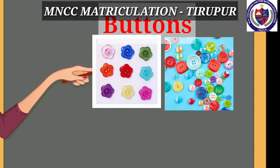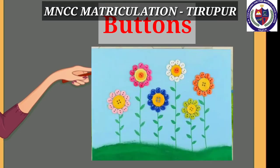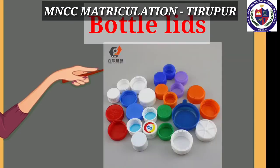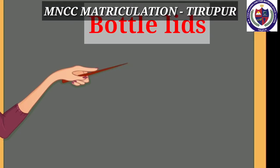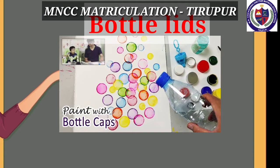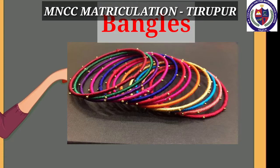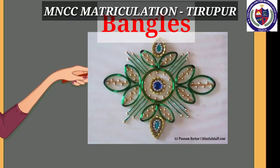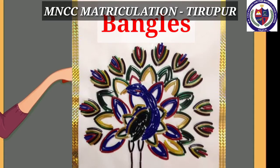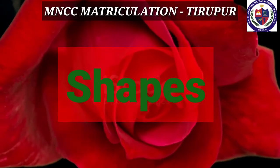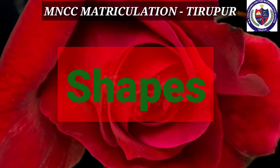Buttons: to make a pattern, you can use the same size or same shape of button. Bottle lids are also used to create your own pattern with the same size. Bangles: here, bangles are used to make a pattern like the given picture of a peacock.